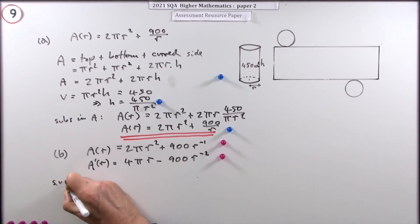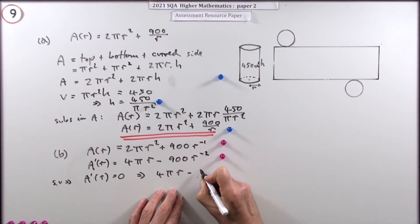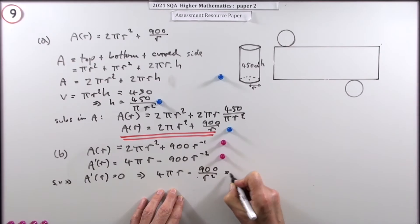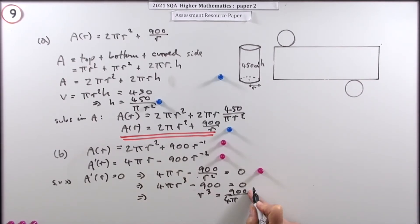Now I'm going to say if there's a stationary value, that means that a dashed r should equal 0. So I'm looking for 4 pi r minus, I'll rewrite this as 900 over r squared equal to 0. Doing that is worth a mark. Let's get rid of that fraction, multiply everything by r squared. I'm going to write 4 pi r cubed minus 900 equals 0. Then could I solve that, just rearrange that in one go, take the 900 over. So r cubed is going to be 900 over 4 pi, which means finally r is going to be the cube root of, and if I divide that into it, that's going to be 225 upon pi for a mark.